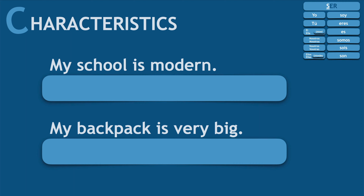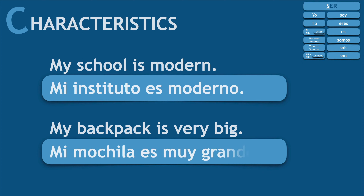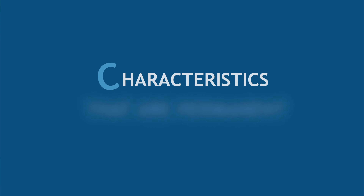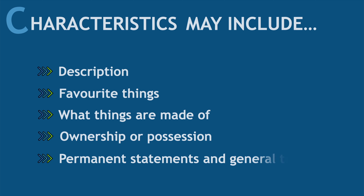Characteristics: My school is modern — Mi instituto es moderno. My backpack is very big — Mi mochila es muy grande. This is probably the hardest acronym to explain. You might have heard or read that SER is for permanent qualities or characteristics. This category includes descriptions of people, places, objects, and animals, if you think that this is a permanent characteristic that describes them and is not subject to change, at least not easily. It will also be used when you talk about your favorite things, or just to say what things are made of, to show ownership or possession. And finally, this category is used when referring to permanent statements, opinions, and general truths.